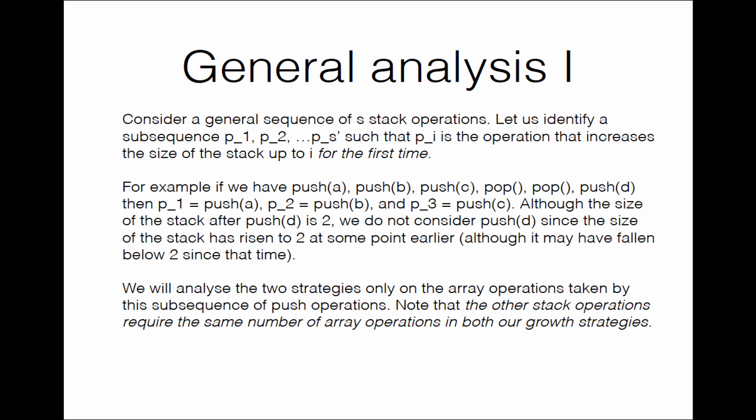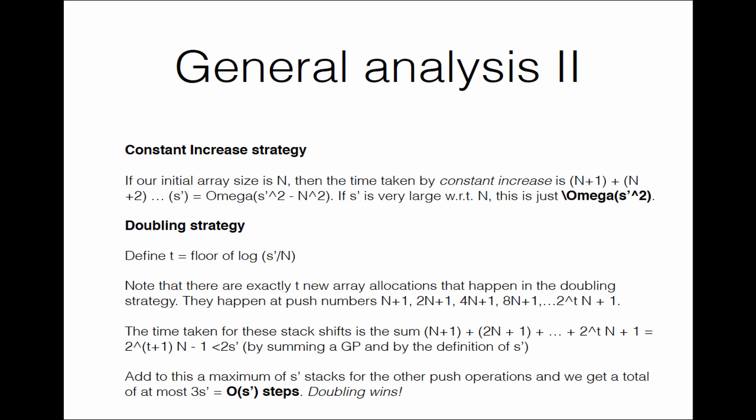Now let us look at the two strategies in the general case. If our initial array size is n, the time taken by constant increase is n+1, plus n+2, and so on up to s'. This is Ω(s'² − n²), which is approximately Ω(s'²) when s' is very large relative to n. In general, since the number of operations will be much larger than the initial stack size, we can say this is Ω(s'²).